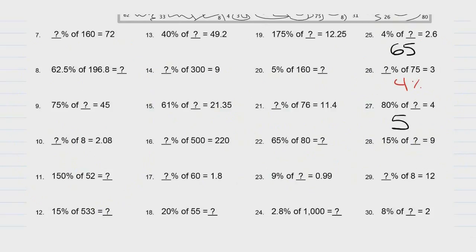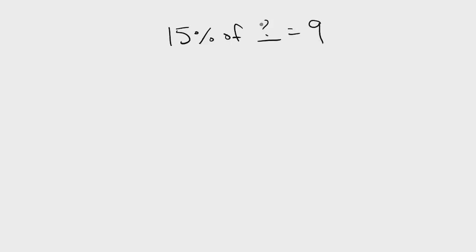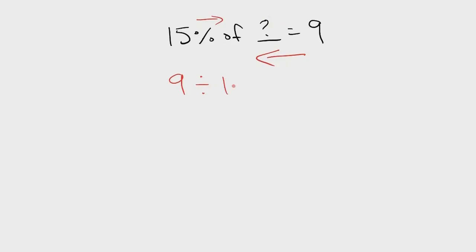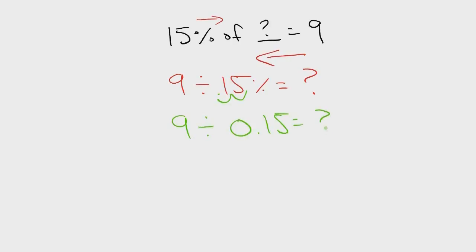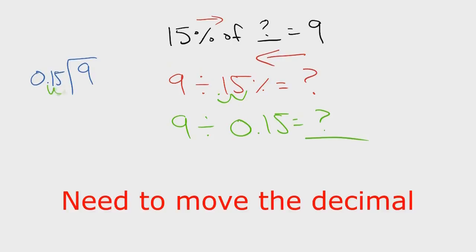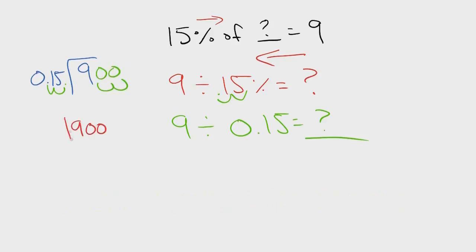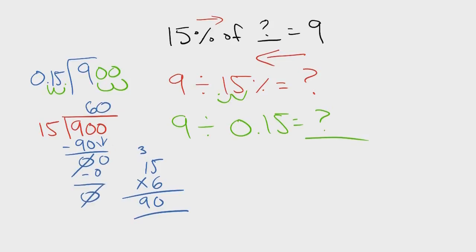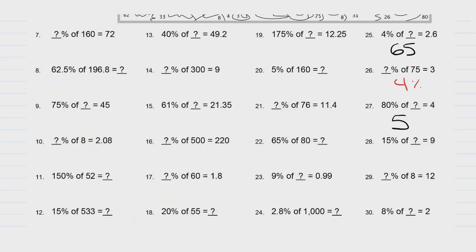Problem 28: 15% of a number equals 9. We're going to have to work backwards — divide: 9 divided by 15% equals the unknown. Change 15% to a decimal: move two spaces left, getting 0.15. Long division: 9 divided by 0.15, giving an answer of 60. 15% of 60 equals 9. Over here, I'm going to write 60.